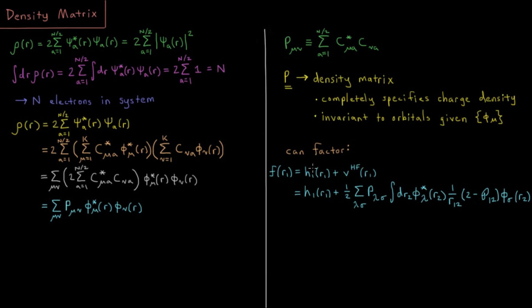The Fock operator is our one electron operator plus our mean field Hartree-Fock two electron operator. Once we use the definition of the density matrix in this way, when we express our occupied orbitals in terms of the basis functions, it becomes the following expression: we get for our two electron Fock operator one half sum over lambda and sigma of density matrix element P lambda sigma integral over R2 of basis function phi lambda star 1 over R12 times 2 minus permutation operator P12 phi sigma.